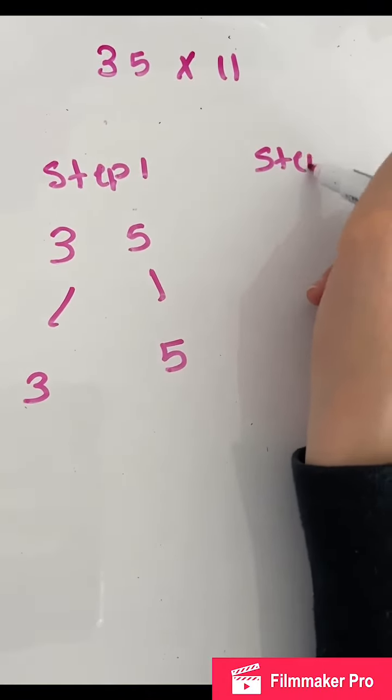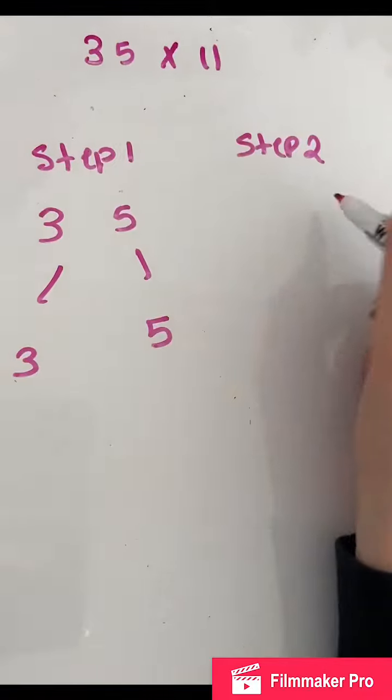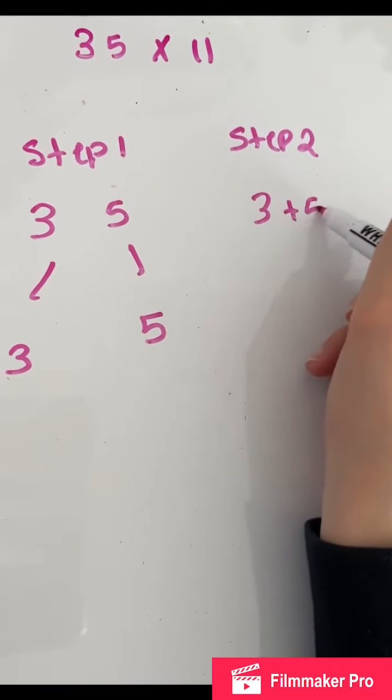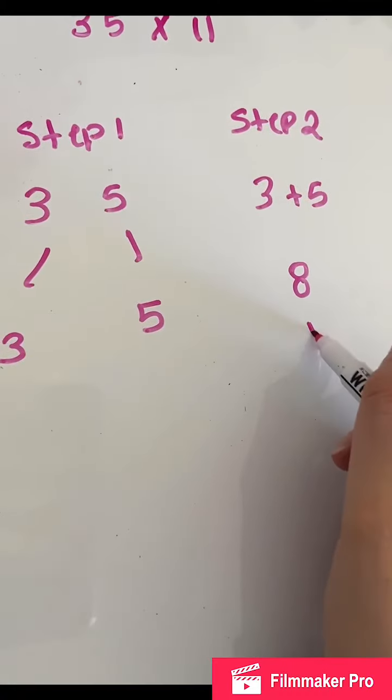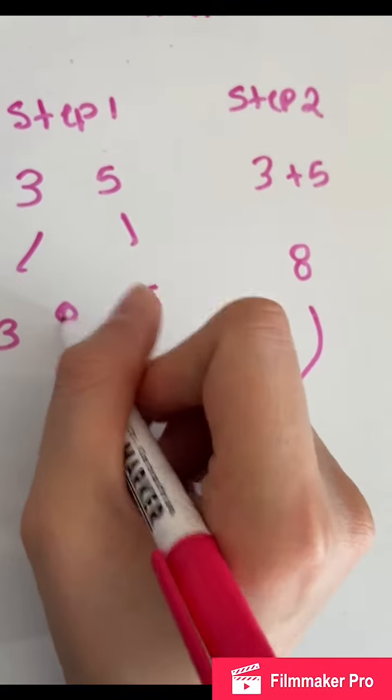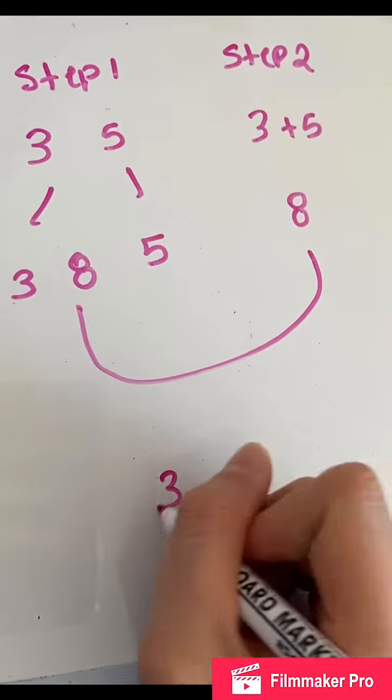Then step two, we're going to add that number, which was three plus five is eight, right? So that eight, we're going to move it and put it right here. And our answer would be 385.